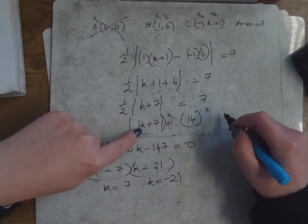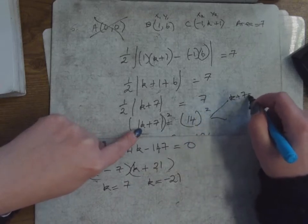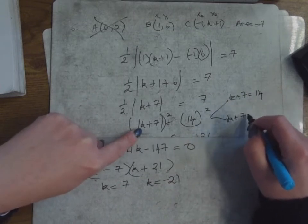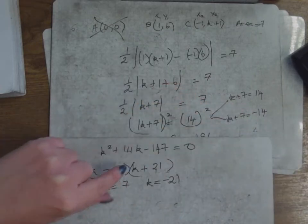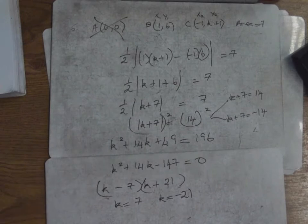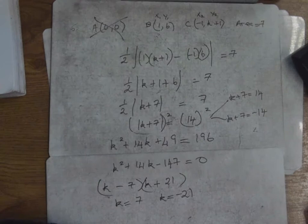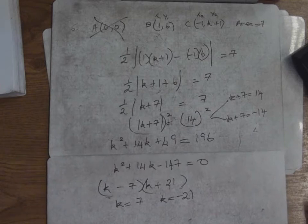Alternatively, when you have |k + 7| = 14, you can split it into k + 7 = 14 or k + 7 = −14, and solve both. But I'm a big fan of squaring both sides because sometimes you can't do it the other way. So let's always do the same thing. Any questions? That was number four — are we all happy? Anyone for number five?